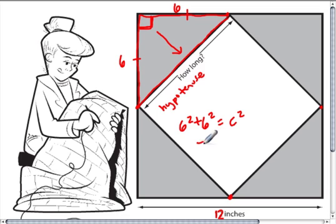36 plus 36 is 72. That's equal to C squared. And therefore, C is the square root of 72. And that's going to be what C is.